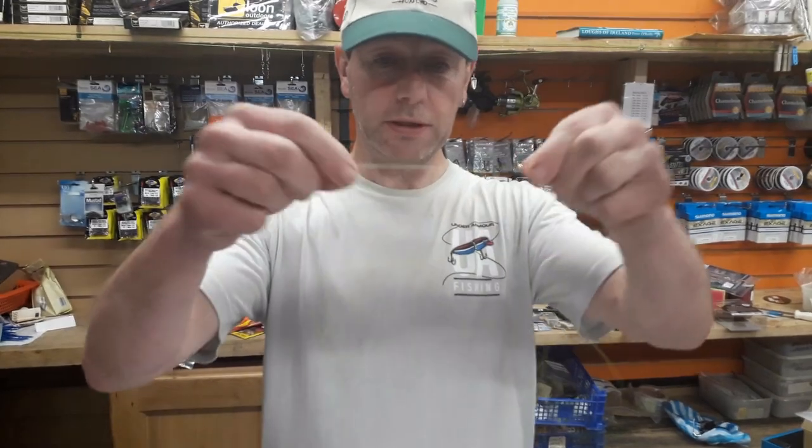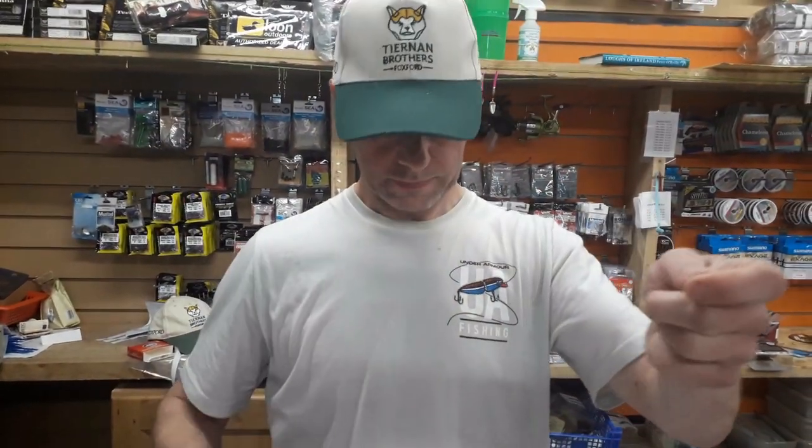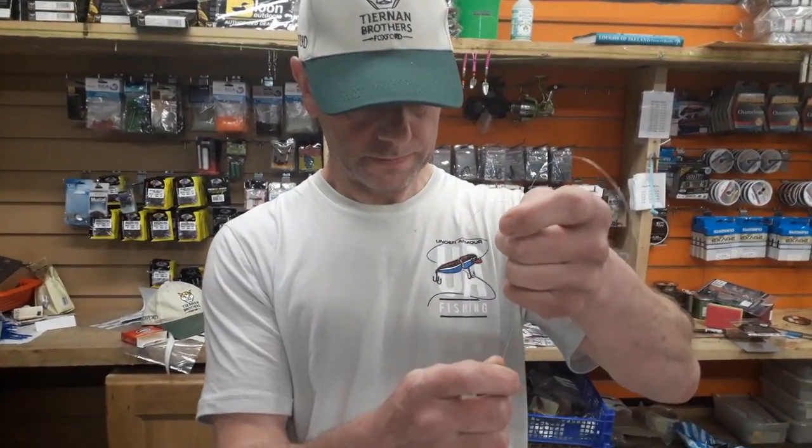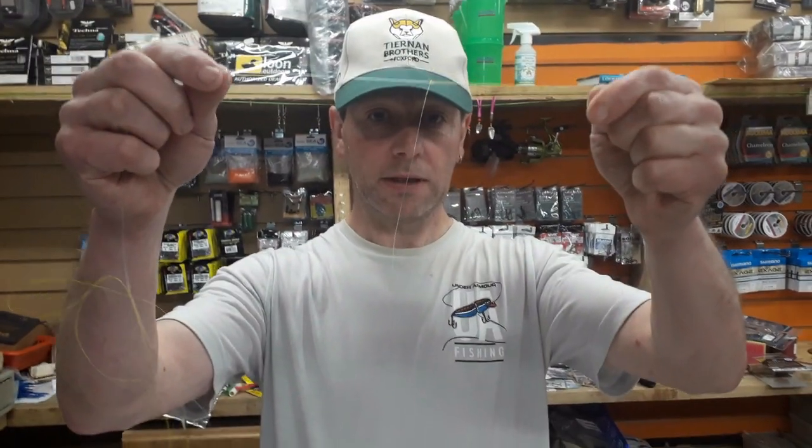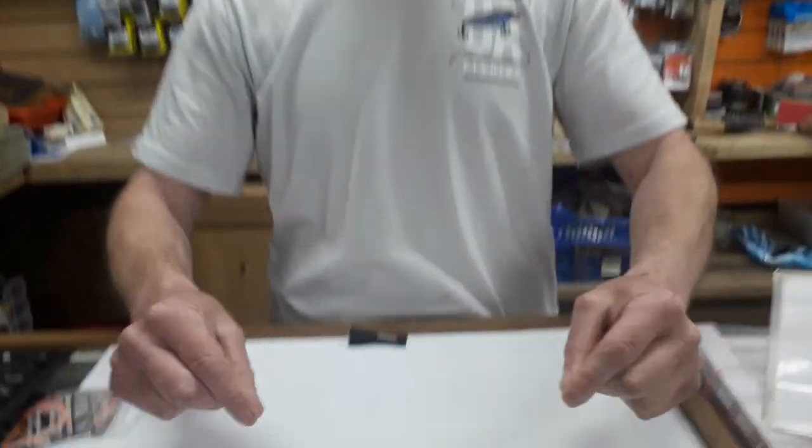If you can see that or not, but there. I'll just get rid of this. So that longer piece there, and I'll put it down here, as you can see. That longer piece there is the dropper and that's where we attach our fly.